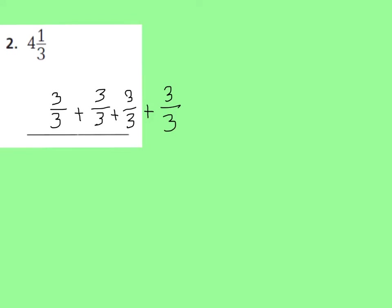So far we have 4 wholes, and now we just add this 1 third to my number sentence. Our denominator stays the same — they're all thirds. Adding up the numerators: 3, 6, 9, 12, plus 1 is 13. So the answer is 13 thirds. We can check it: 4 times 3 is 12, plus 1 more is 13 thirds.